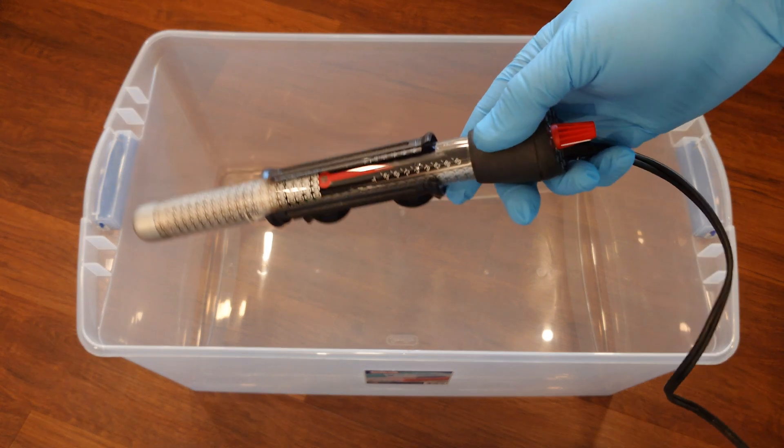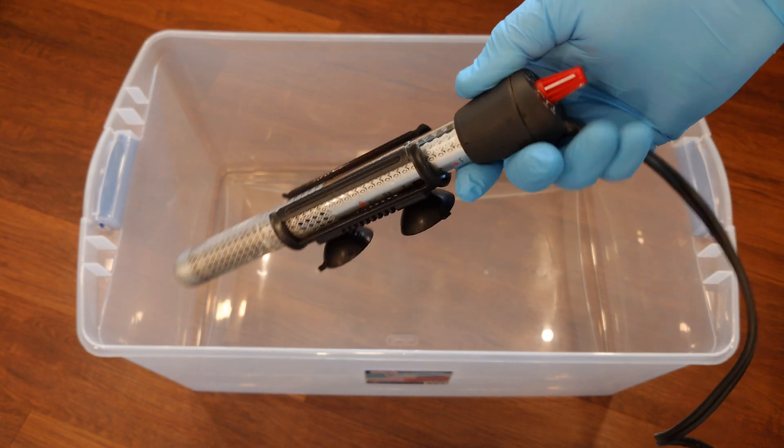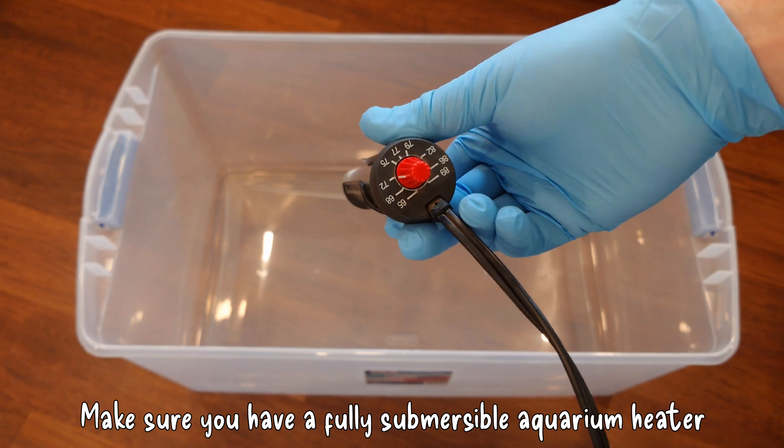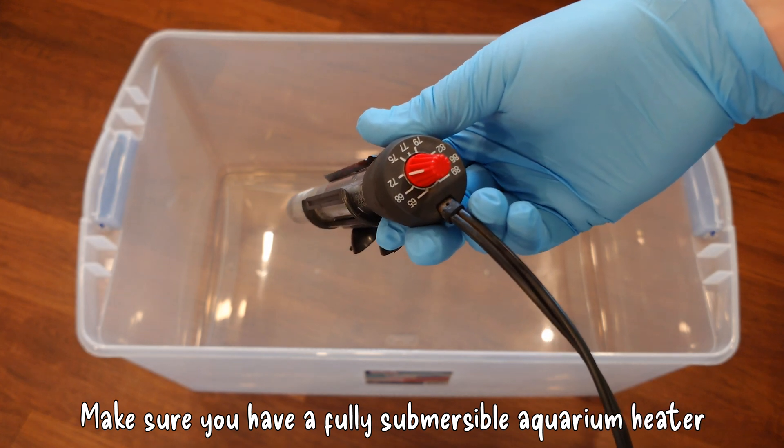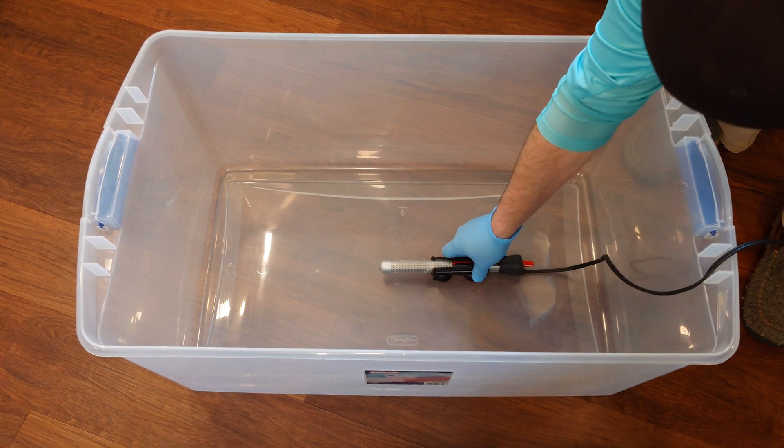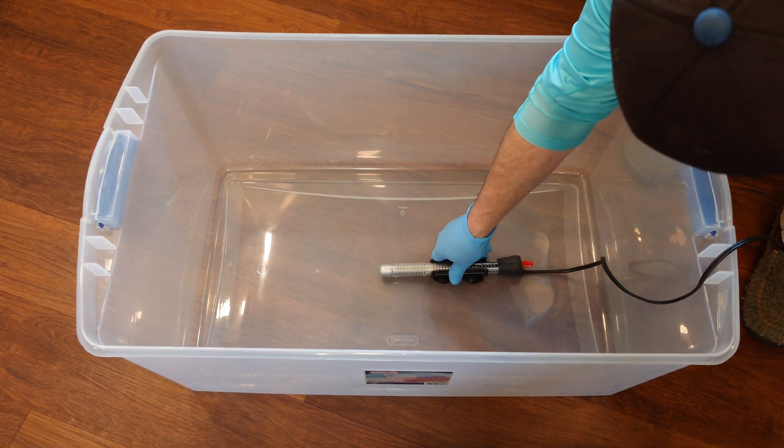We're just starting out with one of our 105 quart Sterilite totes, and we're going to add an aquarium heater which I'm showing you here. This has a temperature control dial on it. You can set it to whatever temperature you want, and it comes with this mount that has suction cups on it so you can suction cup it right to the bottom of your tote.